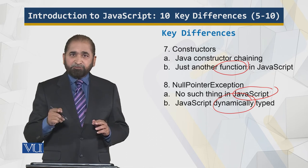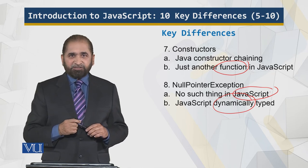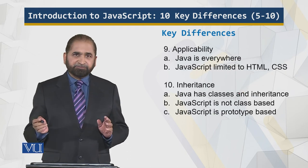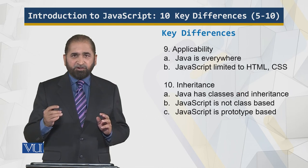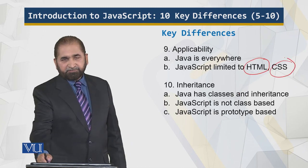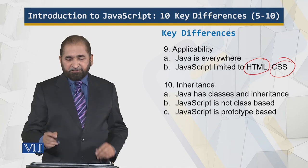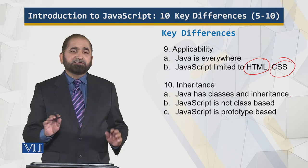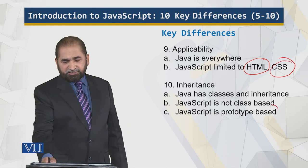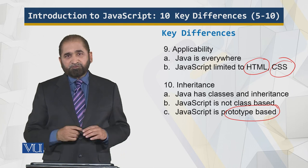JavaScript is dynamically typed — the type of the variable is not fixed — as opposed to Java, where the type of the variable is set at compile time and remains unchanged. Finally, applicability: Java is everywhere, on all devices theoretically, but JavaScript is limited to HTML and CSS — a very limited domain compared to Java. And regarding inheritance: Java has classes and inheritance, while JavaScript technically has no classes — it is prototype-based.